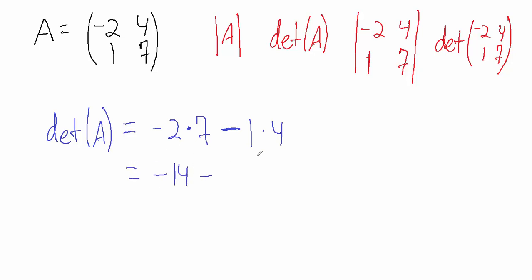And then we have minus 1 times 4. Well, 1 times 4 is just 4, so this is minus 4. And then -14 minus 4 is -18. So the determinant of this matrix here is -18.